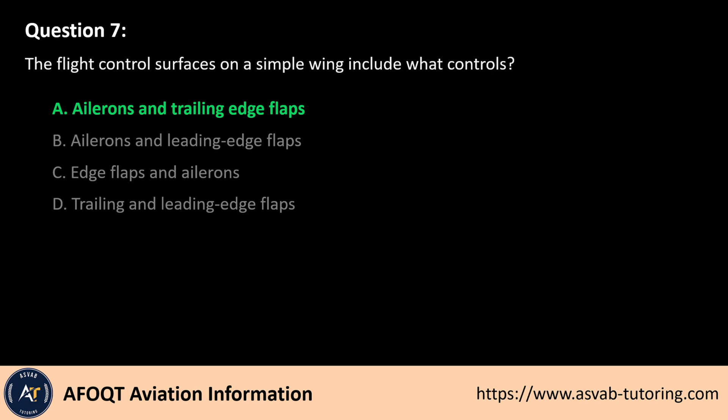The answer is A. A simple wing's flight control surfaces include ailerons and trailing edge flaps. Ailerons, located near the wingtips, control roll by moving in opposite directions. Trailing edge flaps, positioned along the wing's rear edge, increase lift and drag for takeoff and landing. These components enhance maneuverability and improve aerodynamic performance during different flight phases.